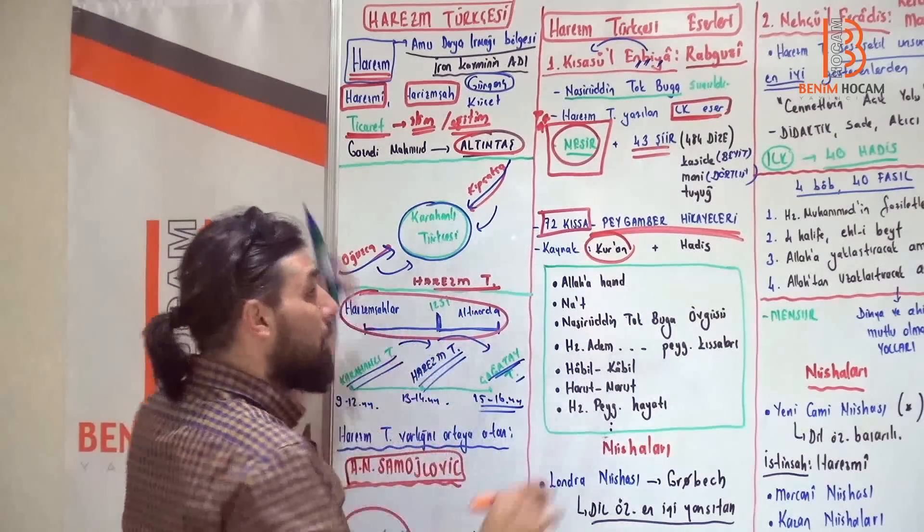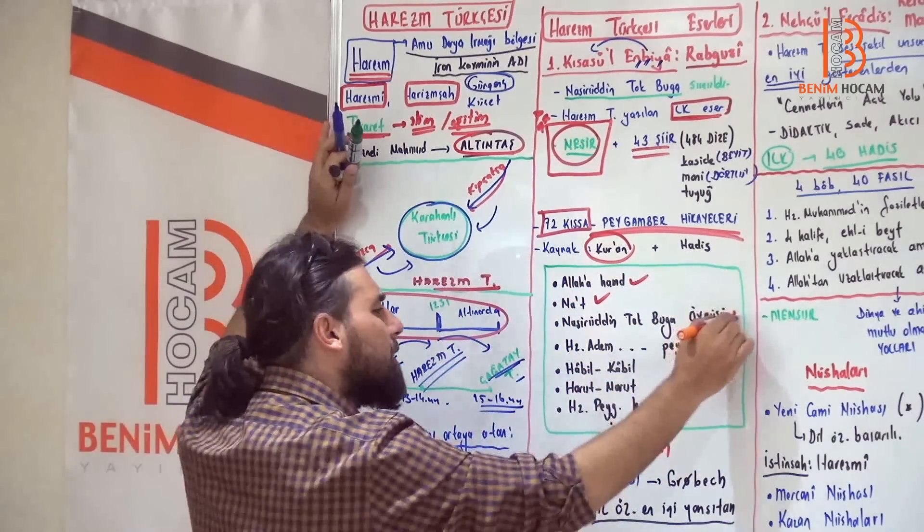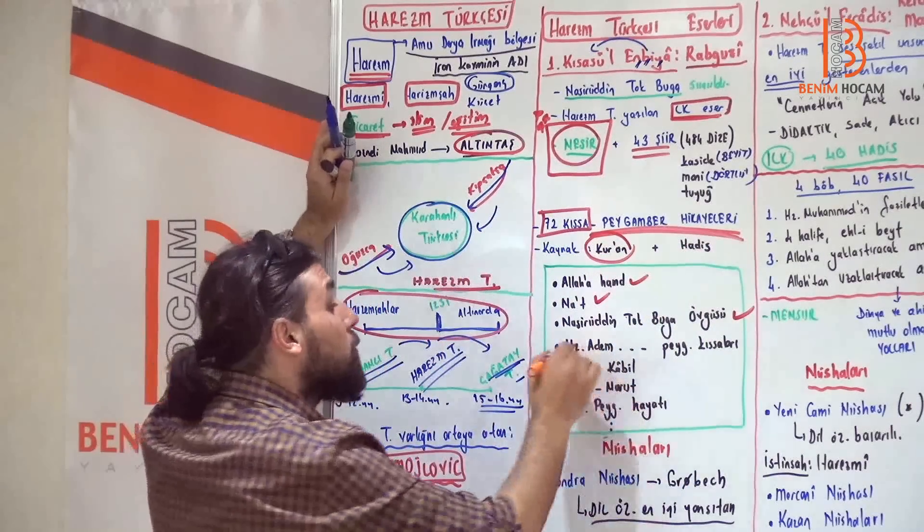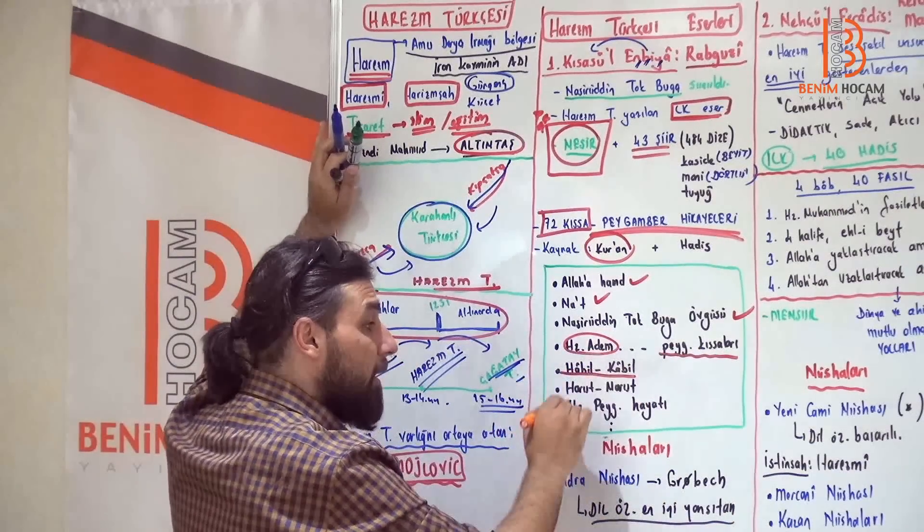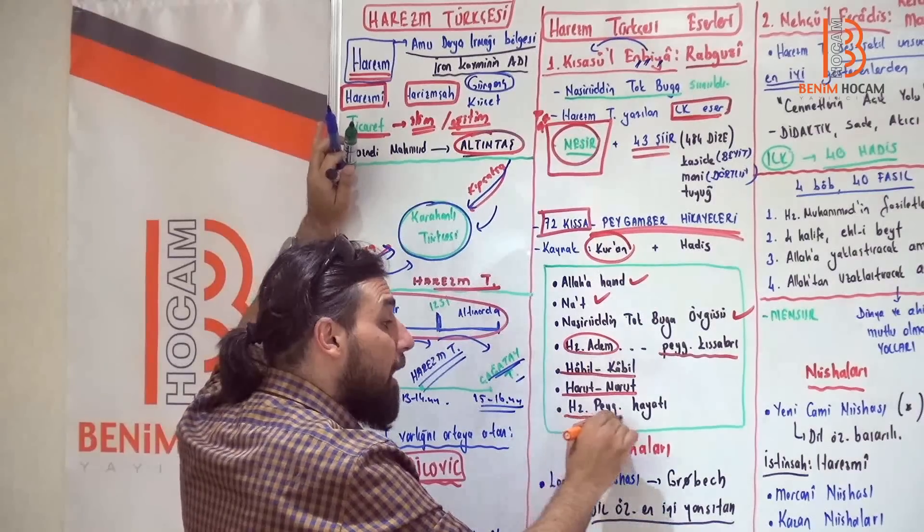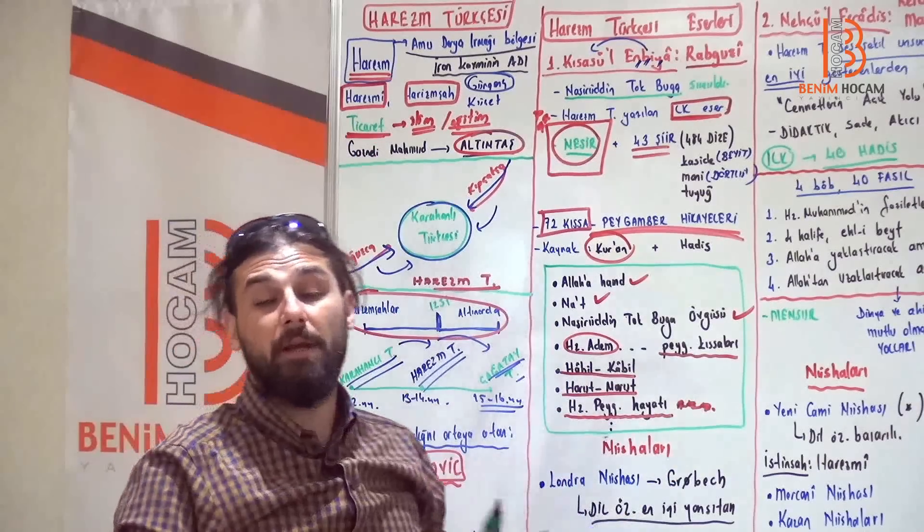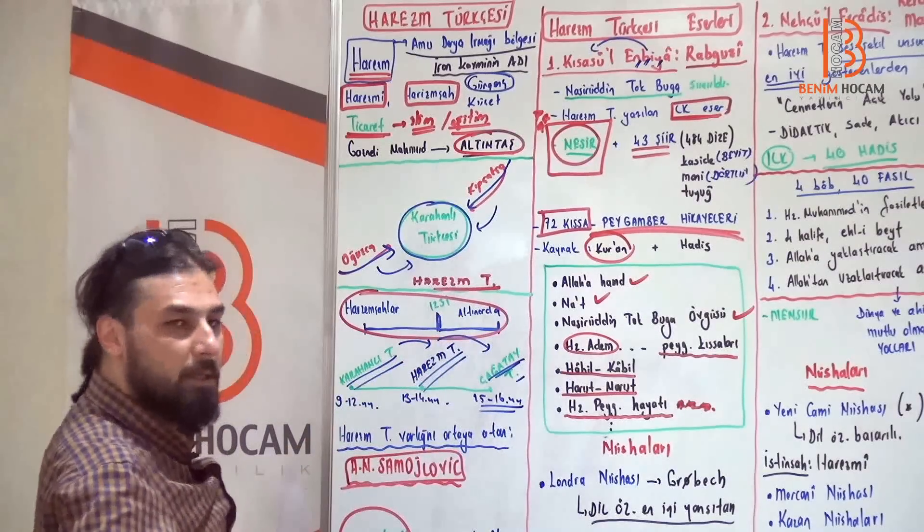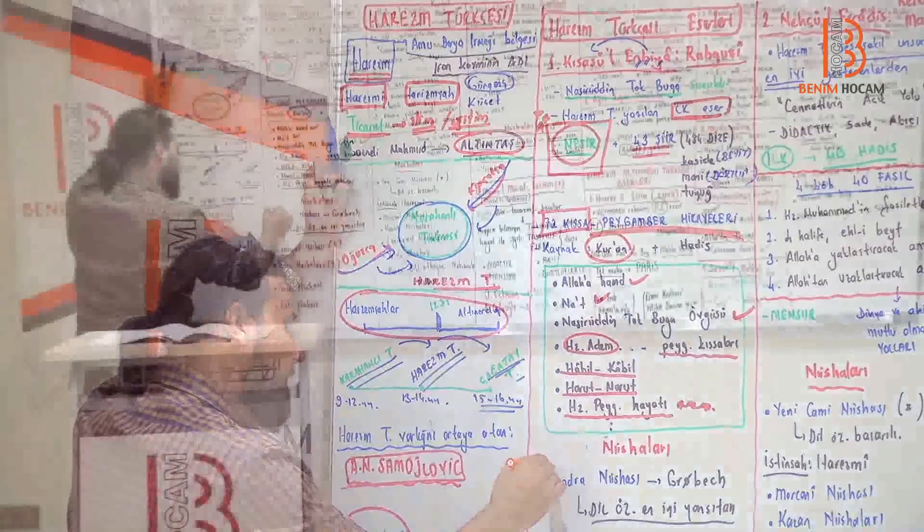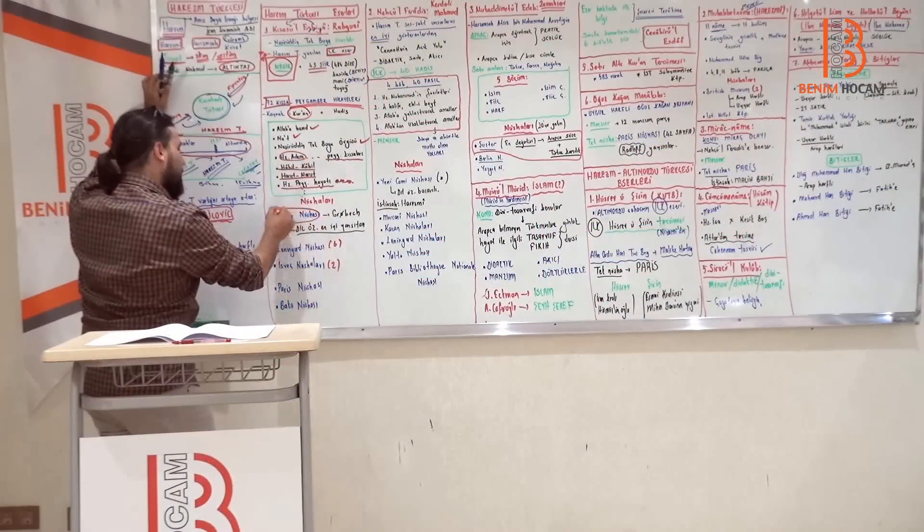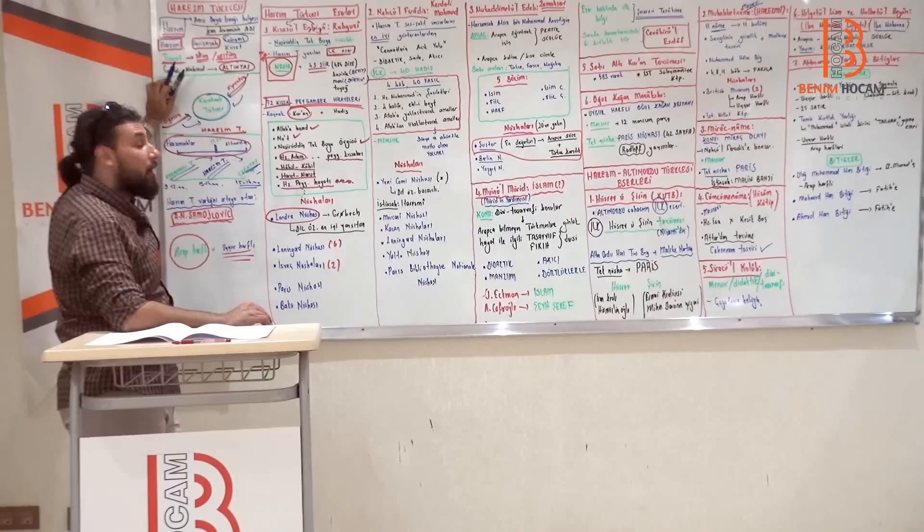Baktık nasıl başlamış eser. Allah hamd etti, Naat, peygamberleri övdü, Nasirettin Tokbuga'yı övdü. Sonra Hazreti Adem'den başlayarak peygamber kıssalarını anlattı. Habil-Kabil olayını, Harut-Marut olayını ve arka Harut-Marut'u ve Hazreti Peygamberimizin hayatına da, Hazreti Muhammed'in hayatına da geniş yer verdi. Nüshalarına bakınca, sizin bilmeniz gereken Nüshalar Londra nüshasıdır. Çünkü dil özelliklerini en iyi yansıtan Nüshadır arkadaşlar, Grombeck tarafından yayınlanmıştır.